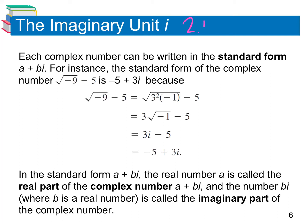This is 2.4 notes. We're going to learn about the imaginary unit, i. Each complex number can be written in the standard form a plus bi, so the real number comes first and then the imaginary number comes second. This is our standard form when dealing with complex numbers.